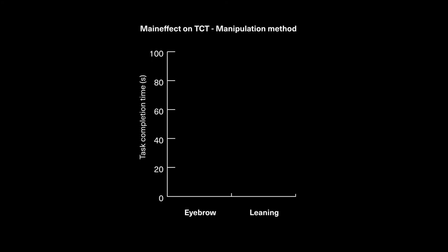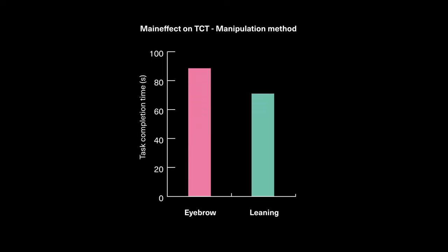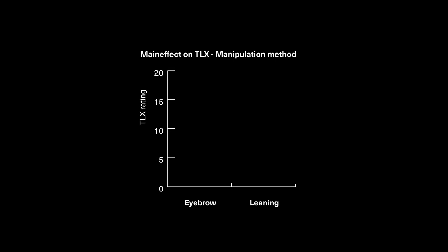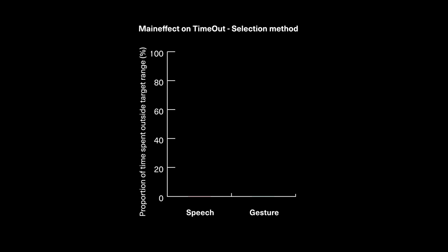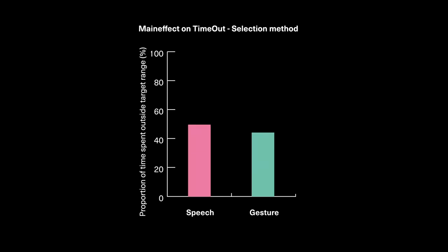Our results pave the way towards efficient, natural, hands-free interaction in a challenging multitasking environment. Taking a closer look at continuous manipulation methods for hands-free zooming reveals that full body movement performs significantly better than facial expressions — moving the eyebrows — in terms of task completion time. We found a main effect, within our sample, between the selection method and the time spent outside the target range for the primary task, indicating that head gestures may influence the primary task less than voice commands.